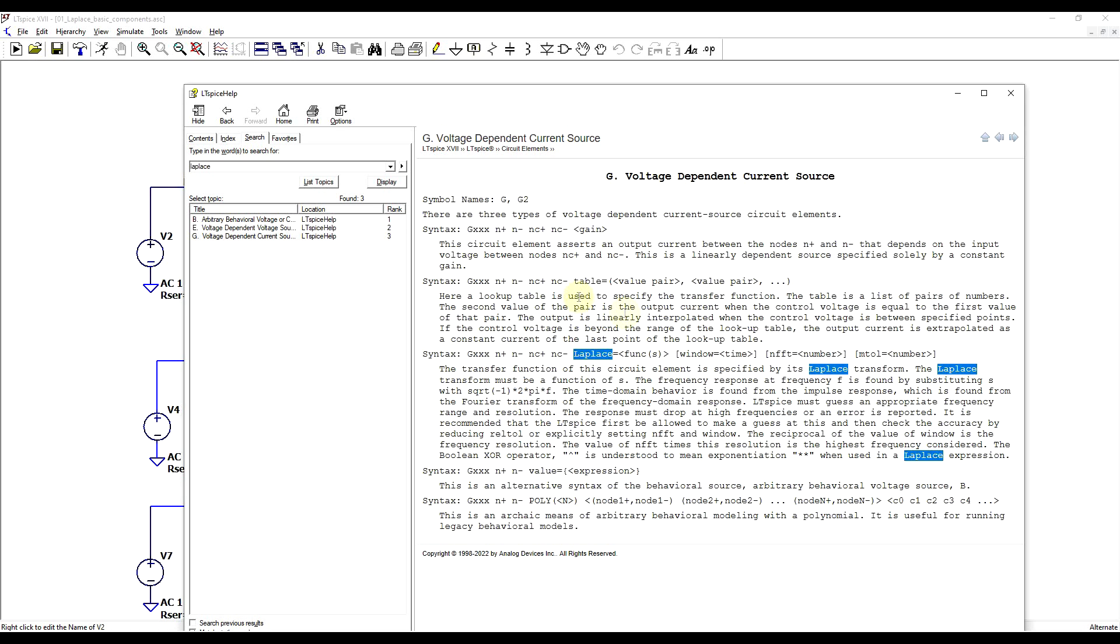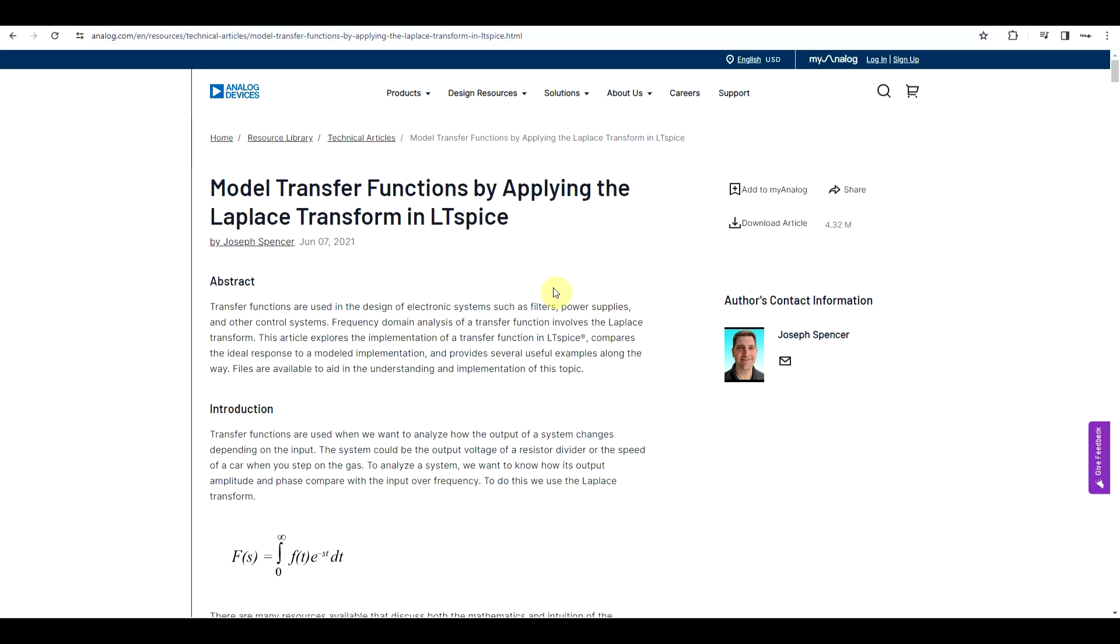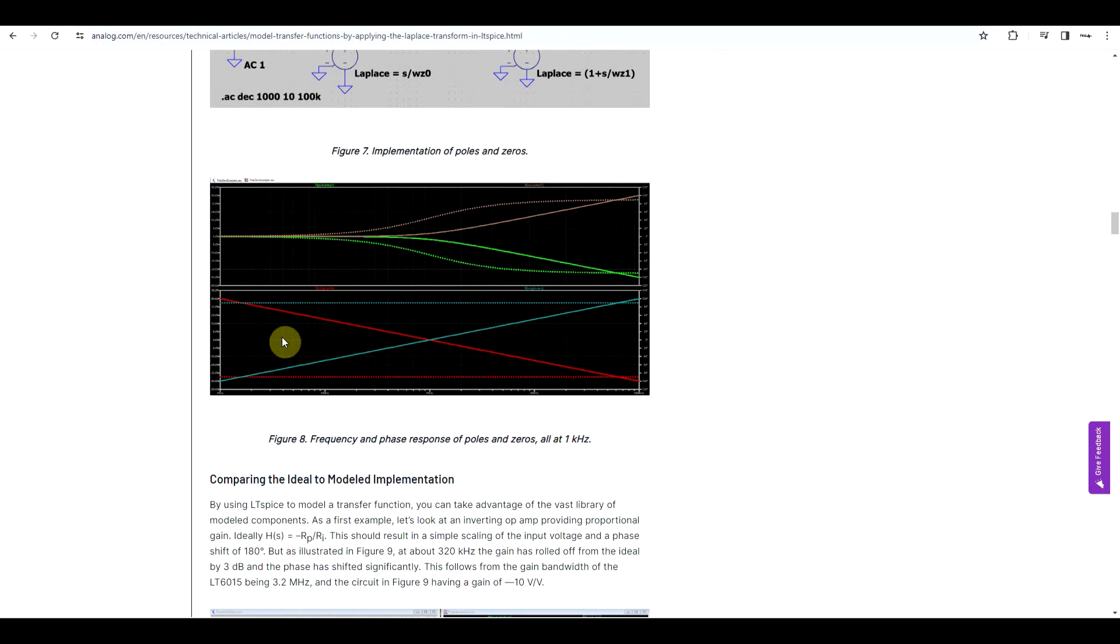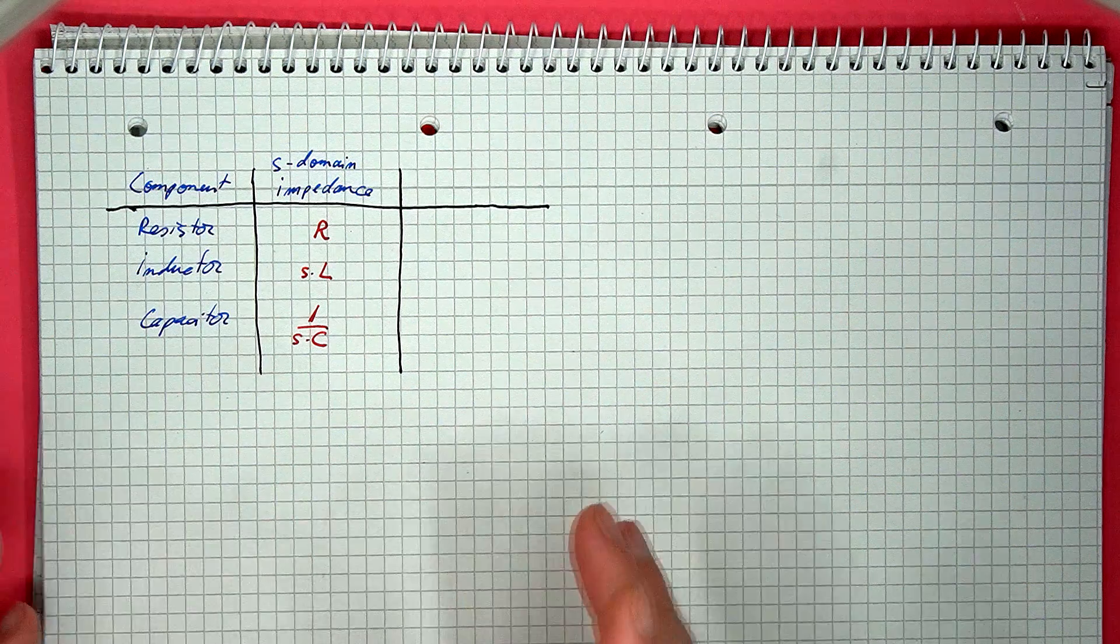Today, I will only be using it in G sources, so voltage-dependent current sources. Although components using the Laplace definition can sometimes work in transient simulations, as is described in this article on filters, this is not always the case. Quite often, you will be running into various errors. However, in AC simulations, they work just fine since the applied signal frequency is well-defined.